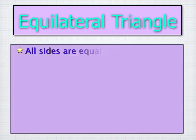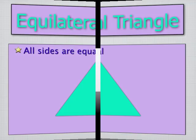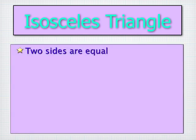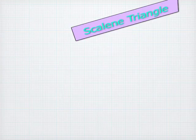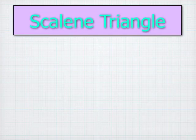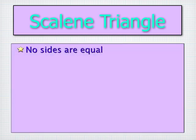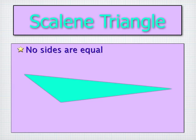Equilateral triangle, here's the definition. Isosceles triangle, and here's the definition and an example. Scalene triangle, also based on the side length of a triangle. No sides are equal, and here's an example.